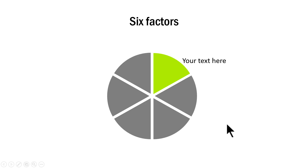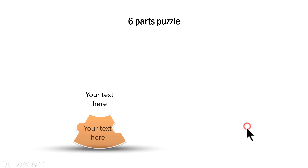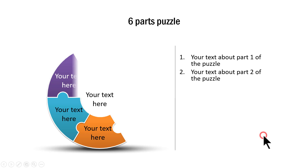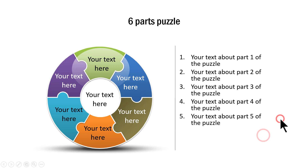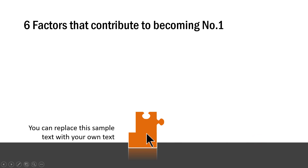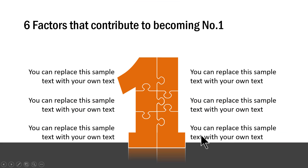If you want to talk about six factors, take a look at this one where we highlight the first through sixth factor in sequence. A variation is the six-parts puzzle where each part and its corresponding label are shown together. If you want to take this idea further — say, representing six factors that contribute to becoming number one — you can use a design where each part of the number one is revealed, and when all six parts are shown, you would be able to be number one.